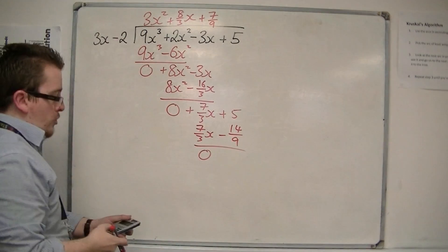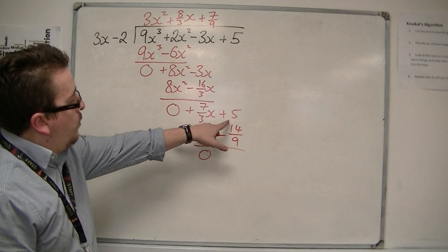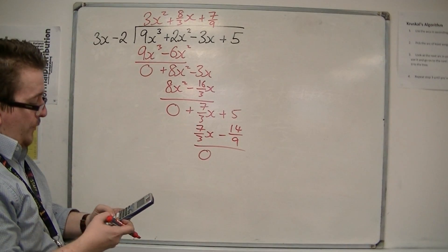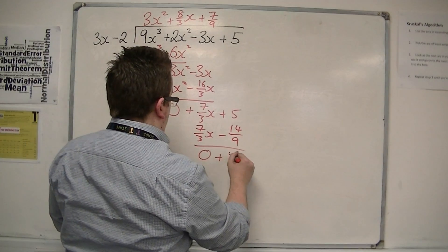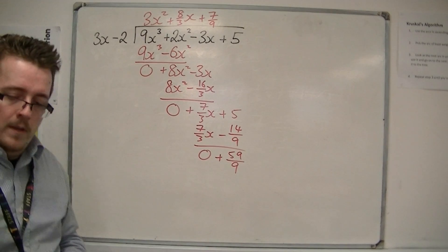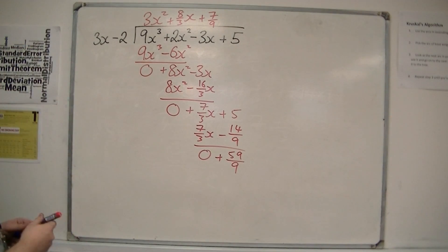Draw a line, perform a subtraction. 5 take away minus 14 ninths is 5 plus 14 ninths, which is 59 ninths. Okay, so that has performed the subtraction.